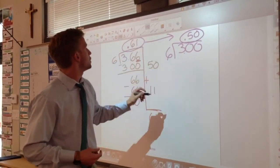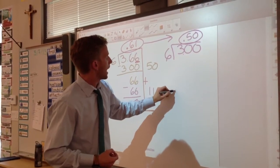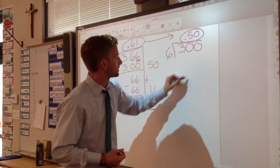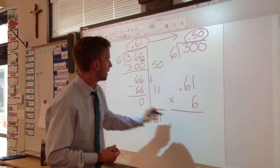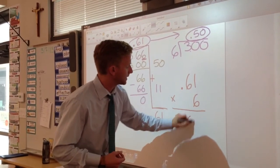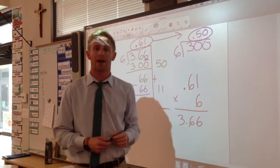Lastly, we could double check our answer's correct by multiplying 0.61, our quotient, by our divisor, which was 6. If we get 3.66, then we know that we have our right answer.